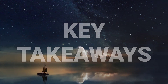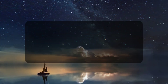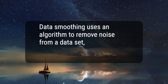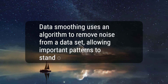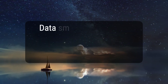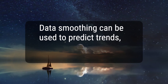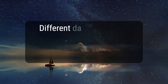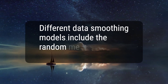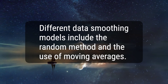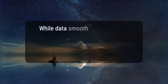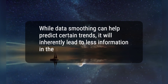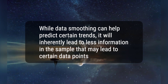Here are four key takeaways. 1. Data smoothing uses an algorithm to remove noise from a data set, allowing important patterns to stand out. 2. Data smoothing can be used to predict trends, such as those found in securities prices. 3. Different data smoothing models include the random method and the use of moving averages. 4. While data smoothing can help predict certain trends, it will inherently lead to less information in the sample that may lead to certain data points being ignored.